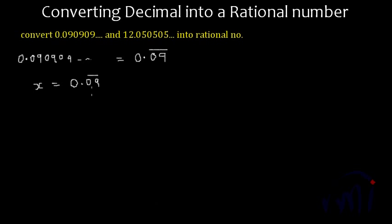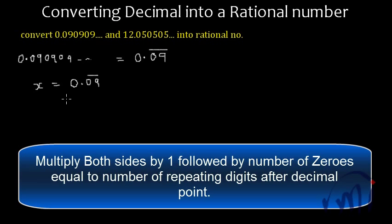Here we have two digits, 0 and 9, which are getting repeated infinitely. So I want both of them in front of the decimal point. To do that, I have to multiply both sides by 100. So it will become 100x equals 9.09 and then a bar over 09 which is getting repeated infinite times.